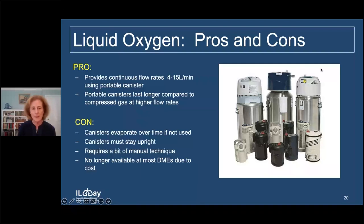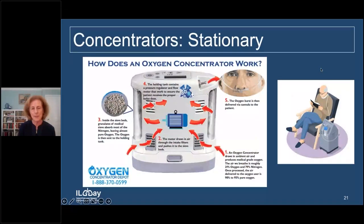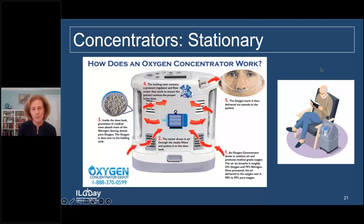Stationary concentrators work by extracting oxygen from the air around you. Air runs through a sieve bed that pulls out nitrogen and spits out a more concentrated form of oxygen — around 85 to 95% oxygen. You never really run out of oxygen with these, but they do run on battery so battery life is somewhat limited; you can replace batteries or plug them in. They come both in a stationary and portable form.